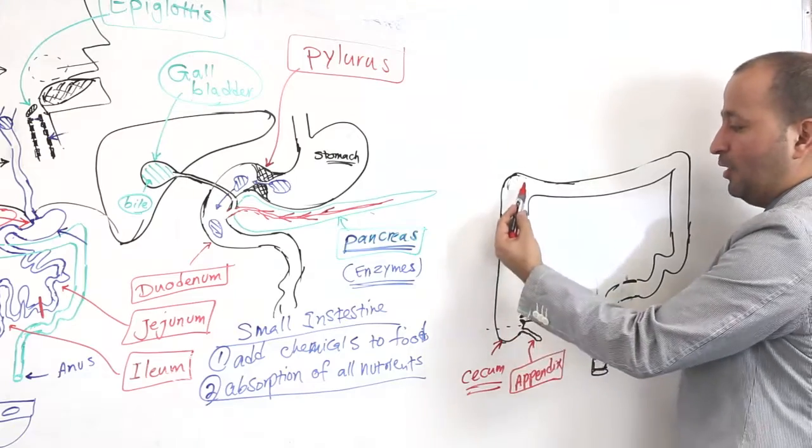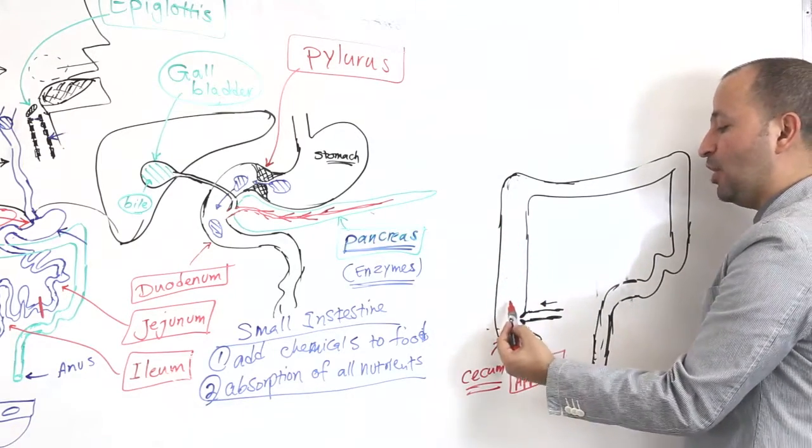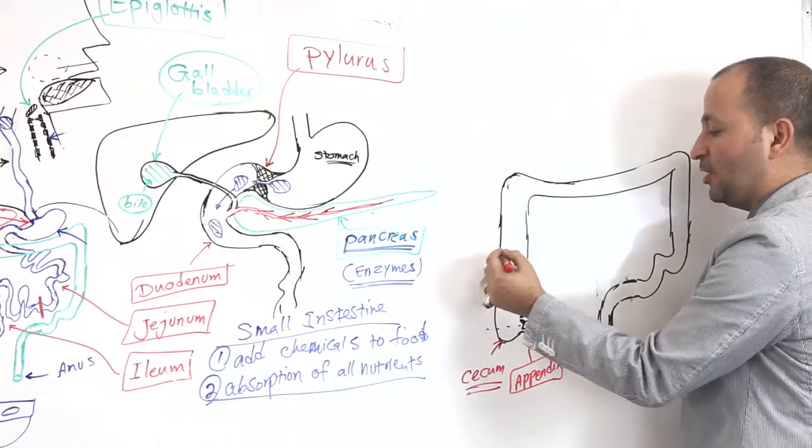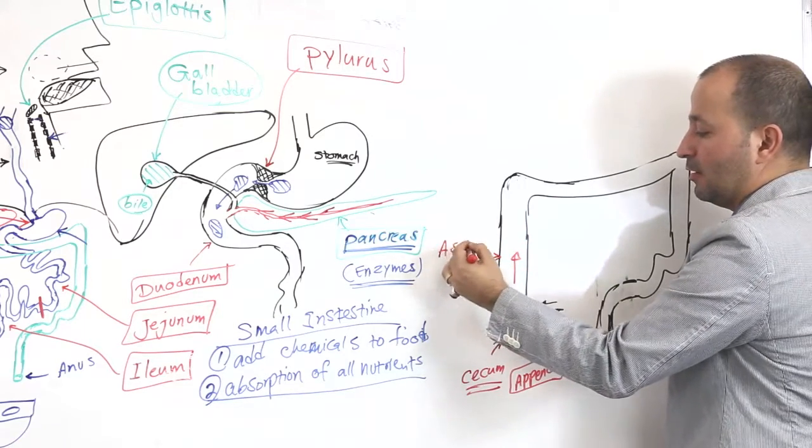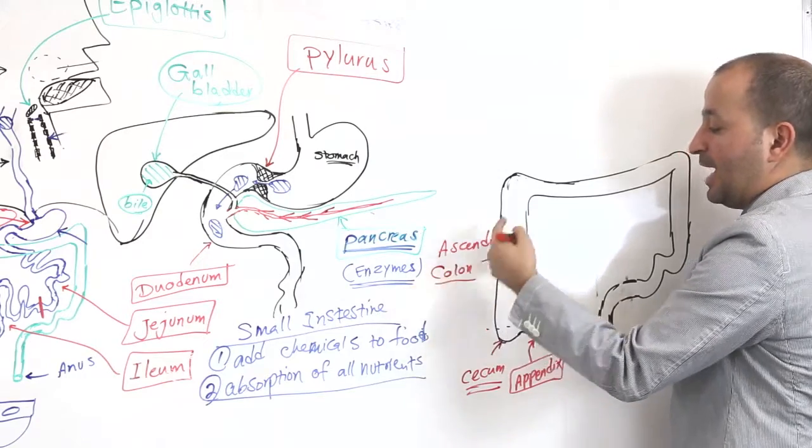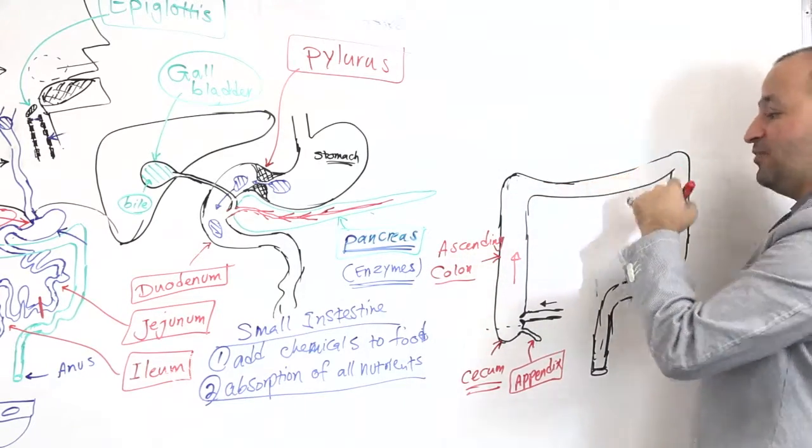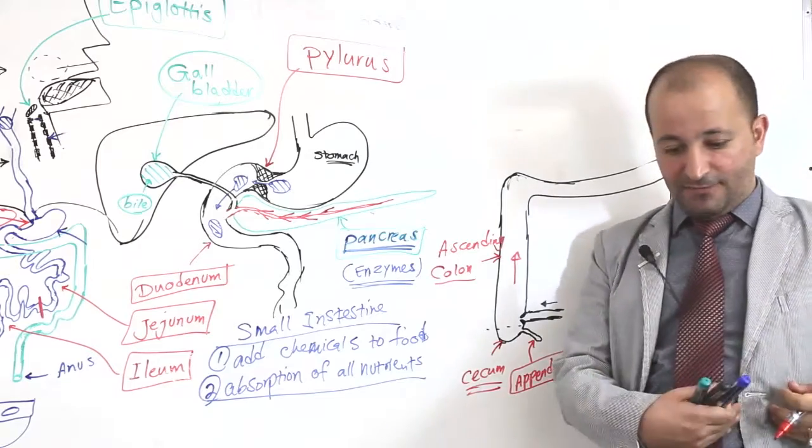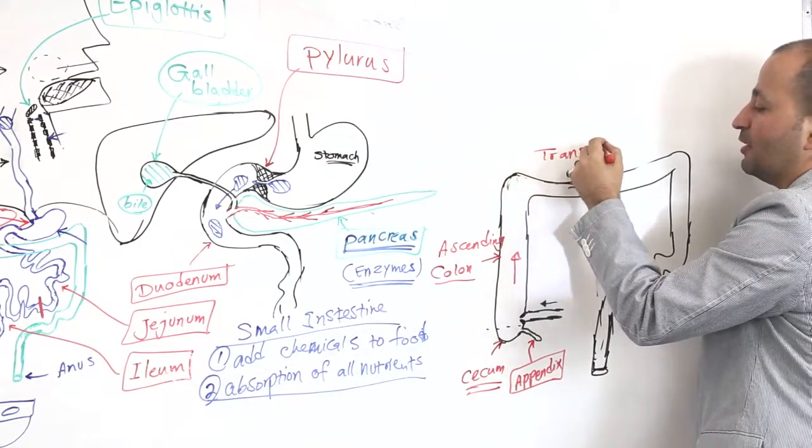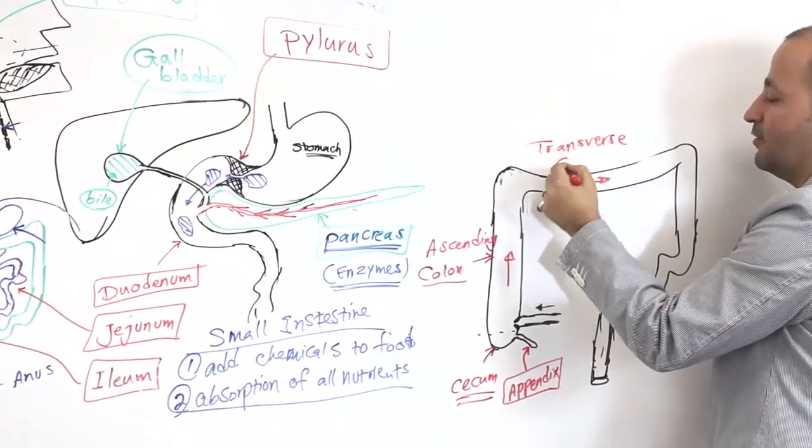Then you have here a colon. This colon is, because the food or feces going upward, we call it ascending colon. And then you have a whole colon. And the food or feces goes transversely from the right side to the left side. That is called transverse colon.